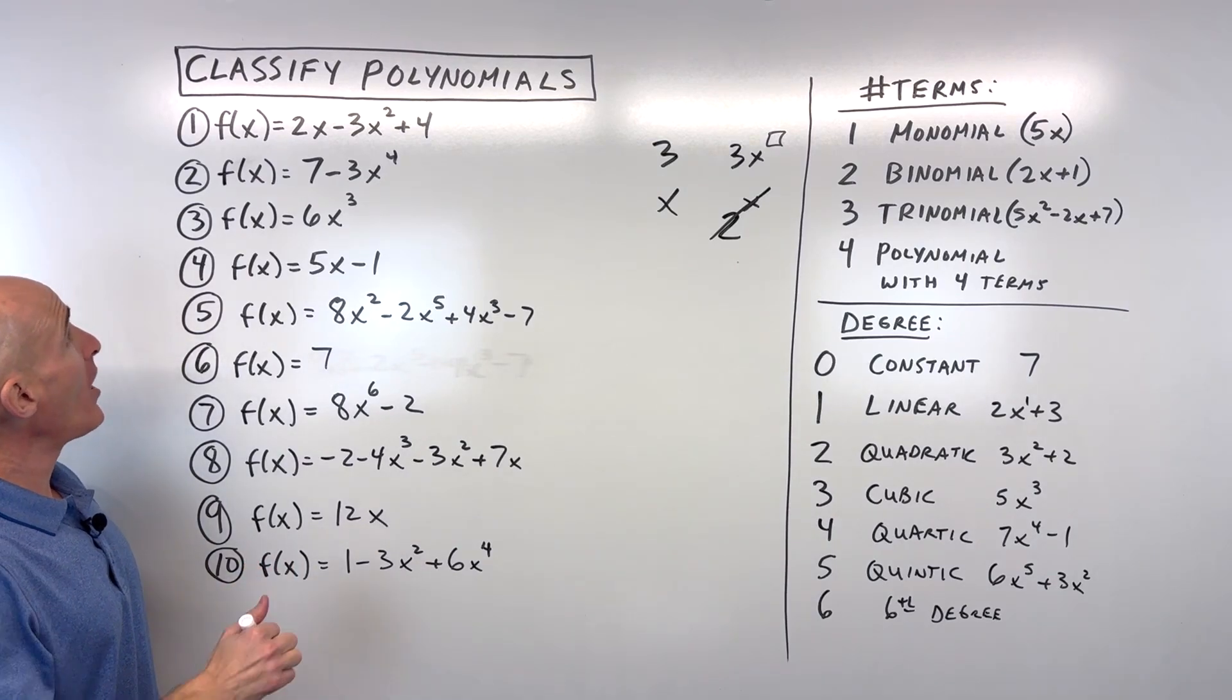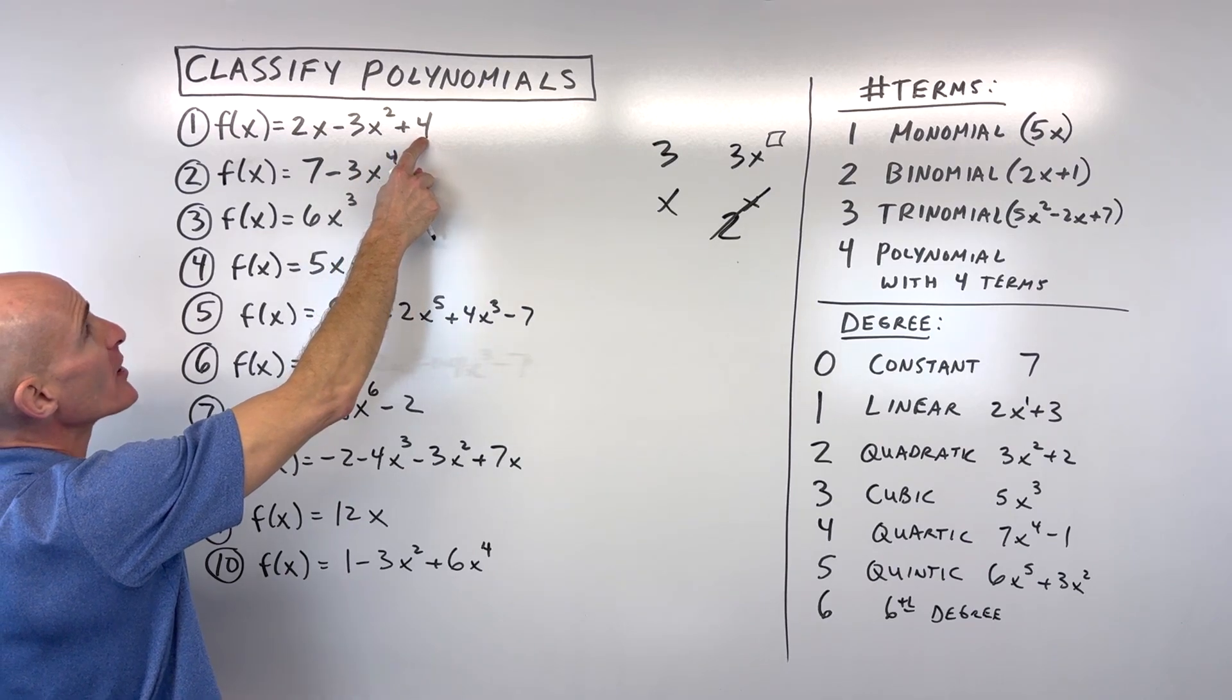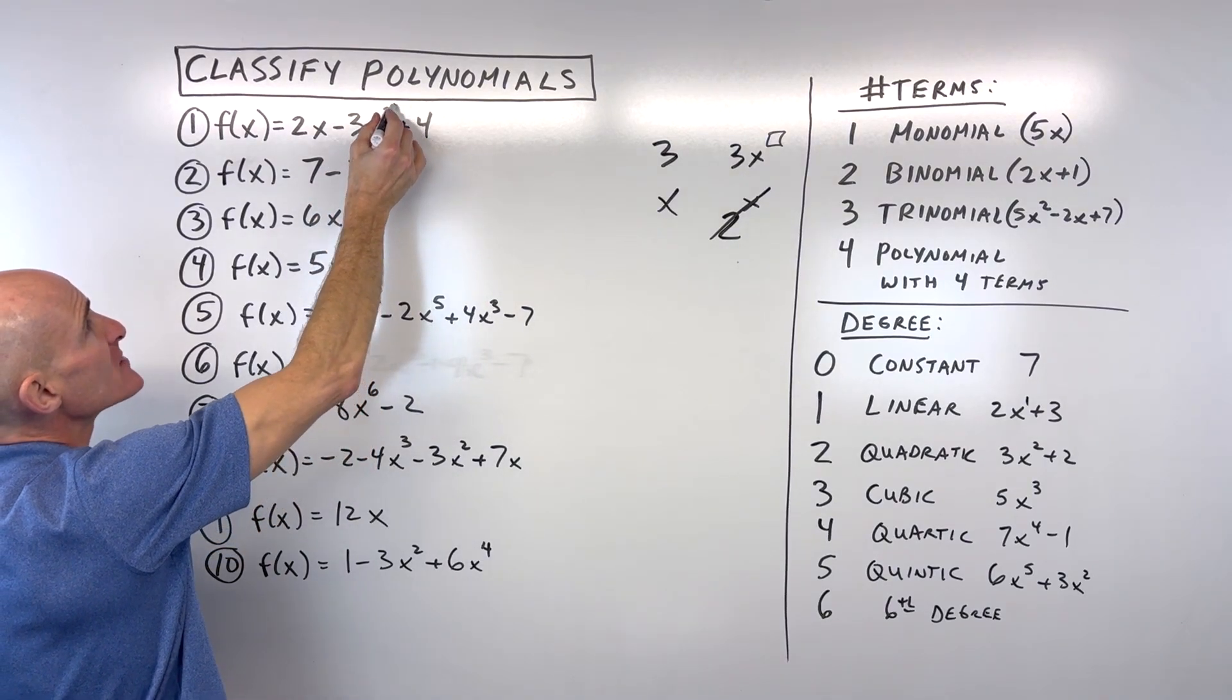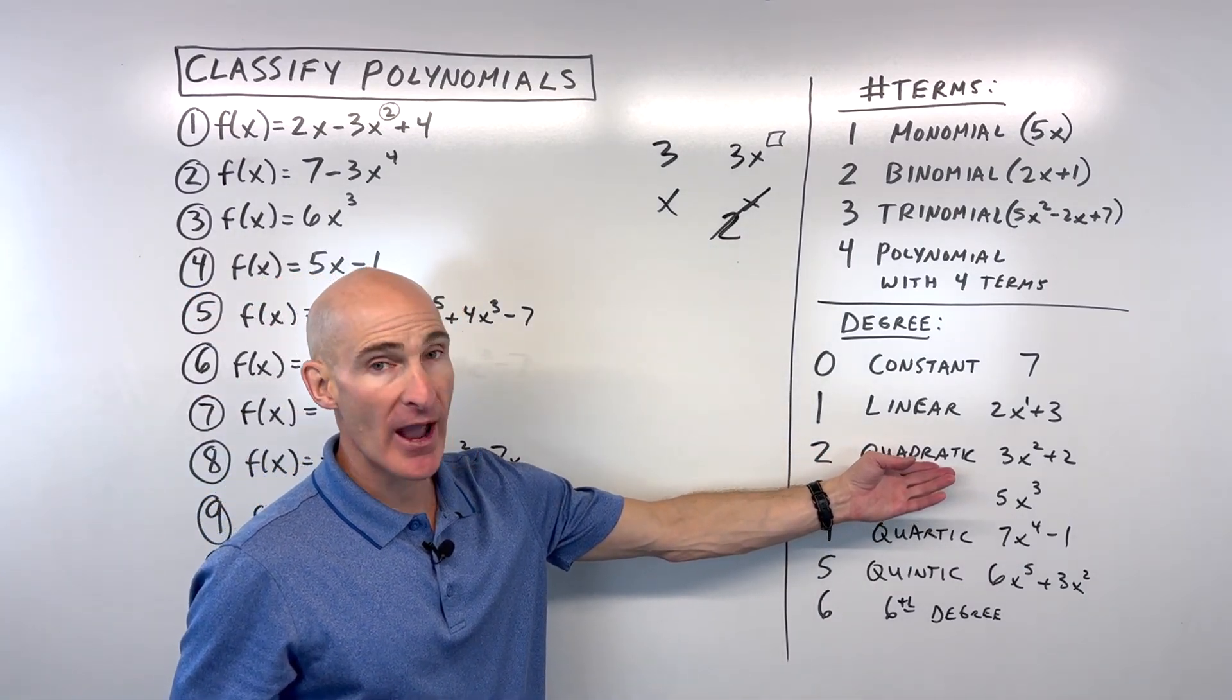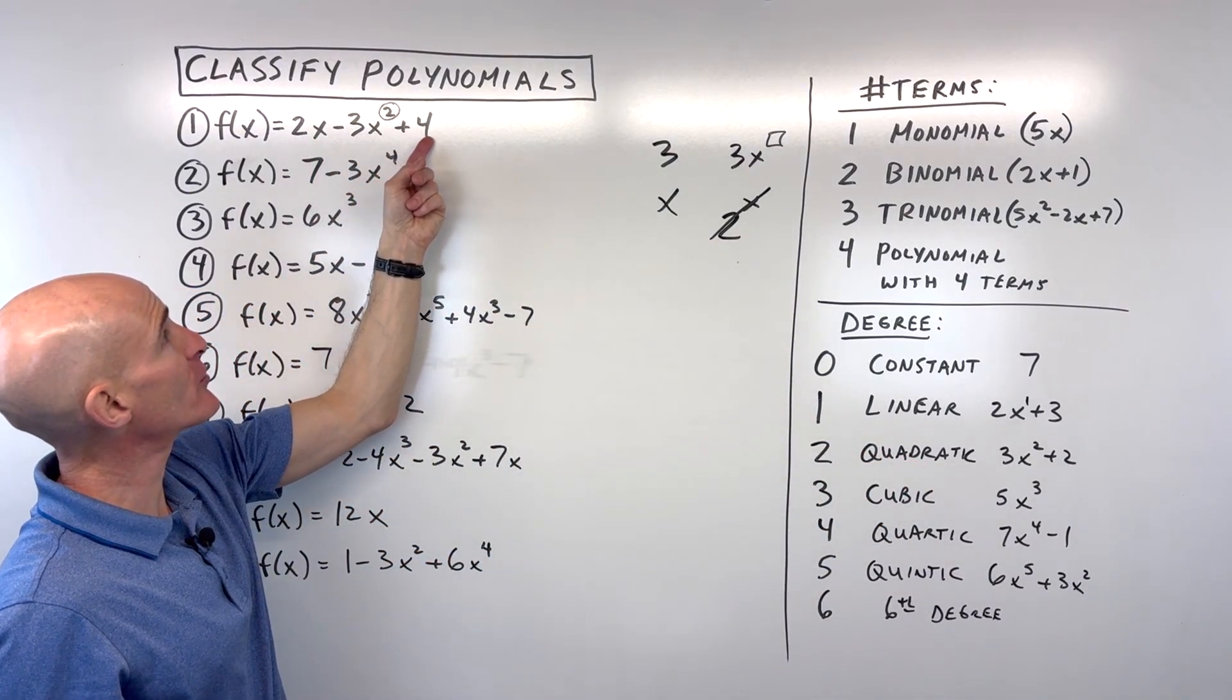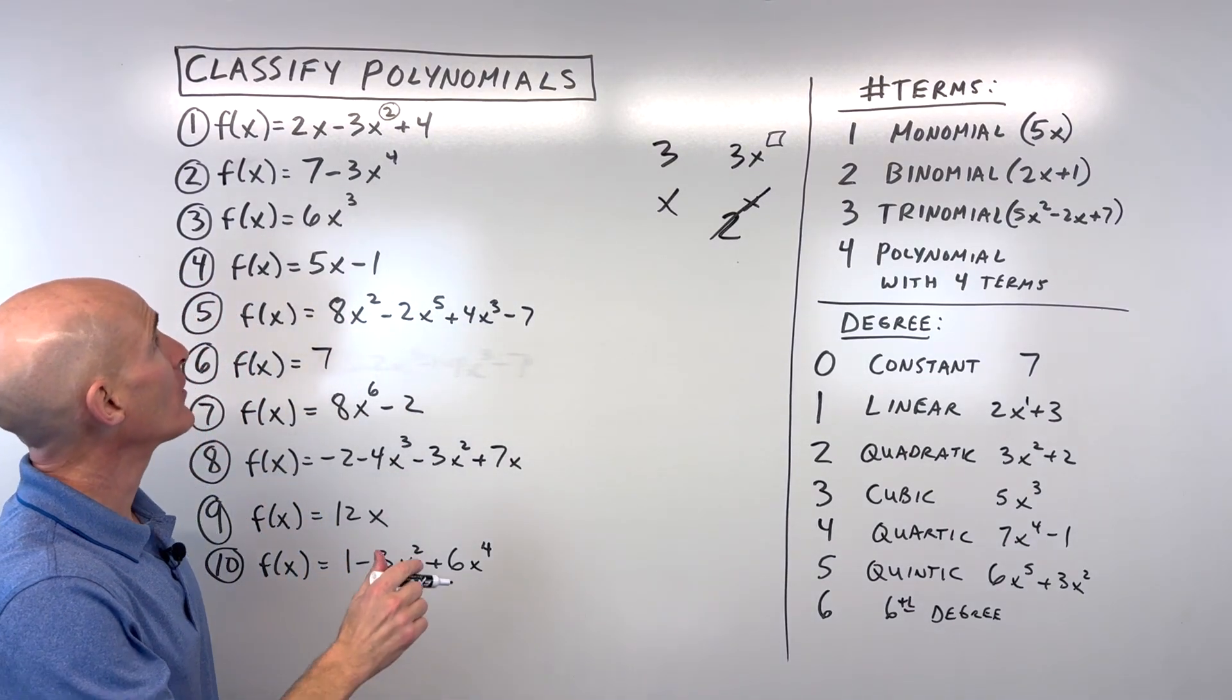So for number one, what do you think here? f(x) = 2x - 3x² + 4. Notice that highest power is a 2, so we're thinking it's going to be a quadratic. How many terms does it have? 1, 2, 3. So we call it a quadratic trinomial.